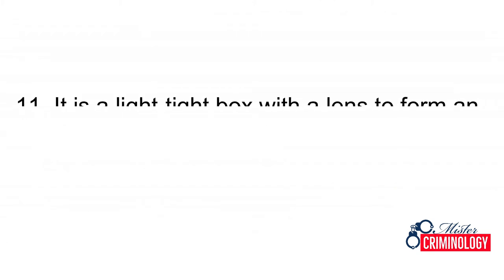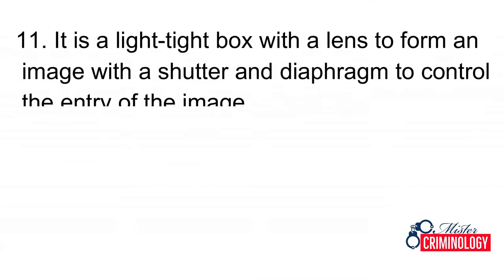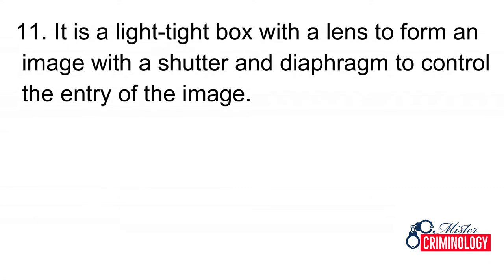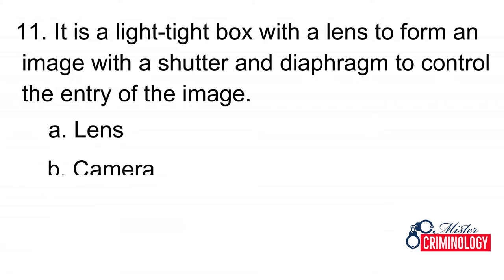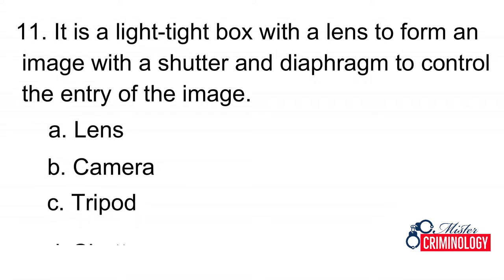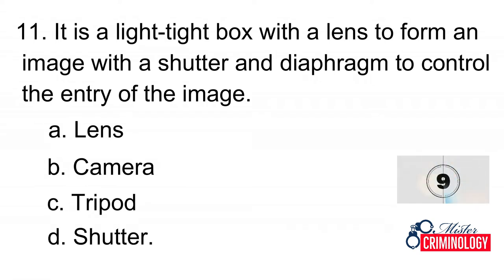Question 11: It is a light-tight box with a lens to form an image, with a shutter and diaphragm to control the entry of light. A. Lens, B. Camera, C. Tripod, D. Shutter. Answer: B. Camera.